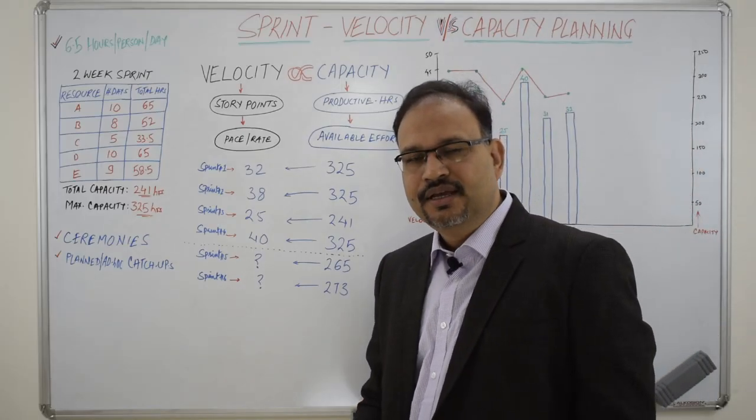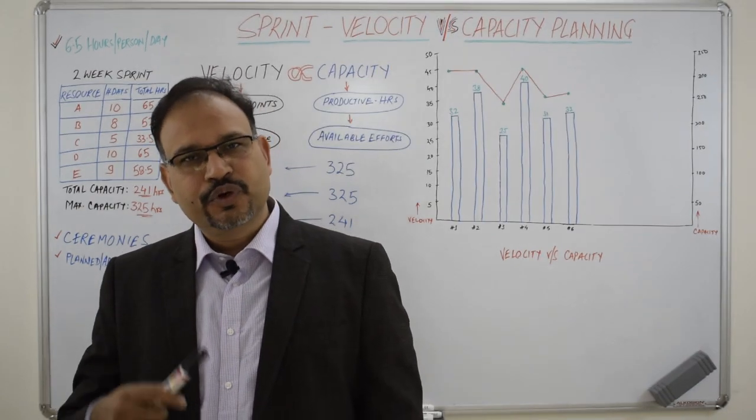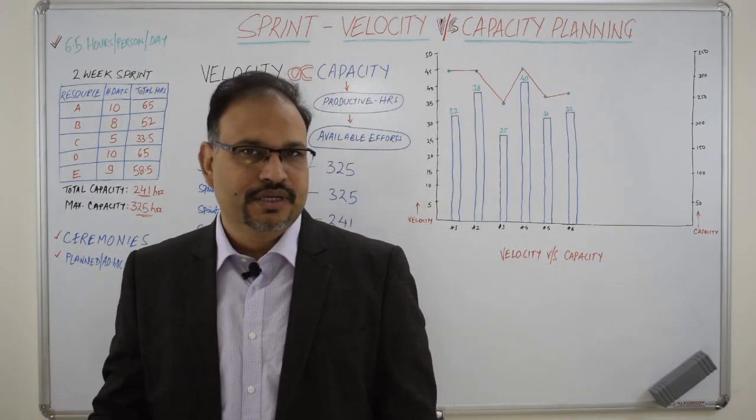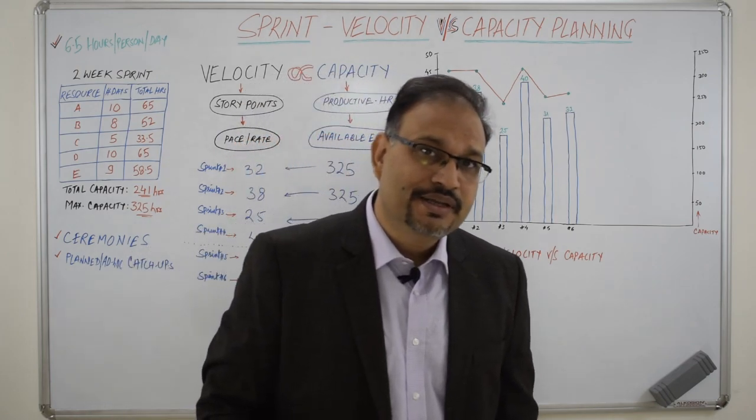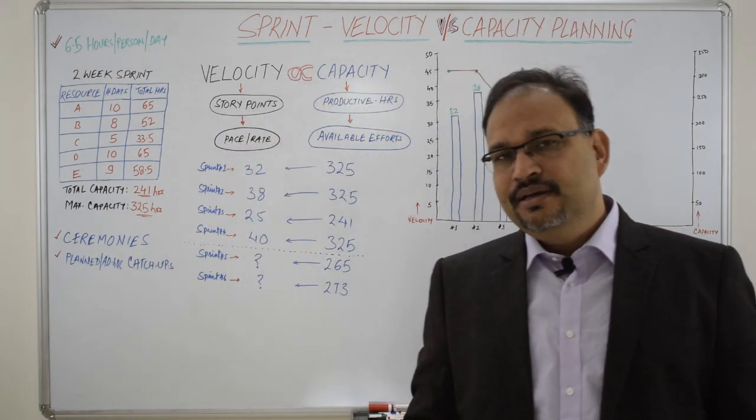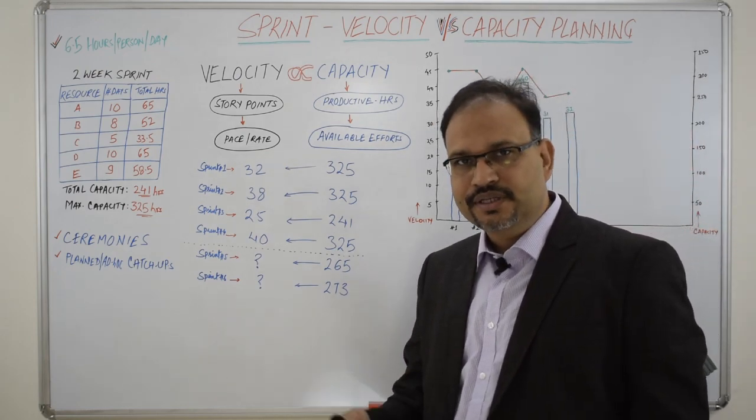Hi there, this is Ajit here. During the Agile workshop which I take at the organization level, I am quite frequently asked how does the capacity planning impact the velocity or what is the relationship between velocity and the capacity. I do explain the relationship by giving examples and I thought I should extend this session to the wider audience.